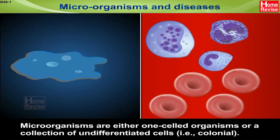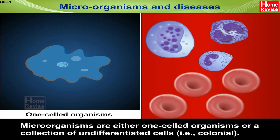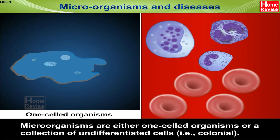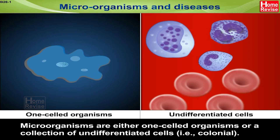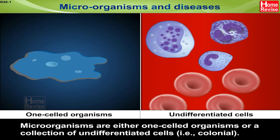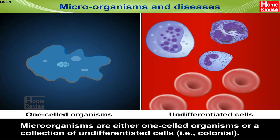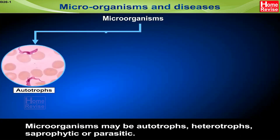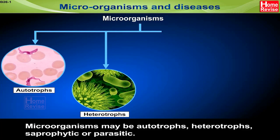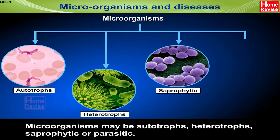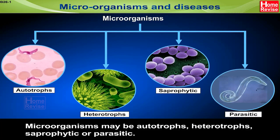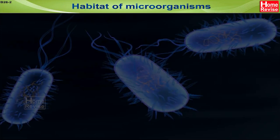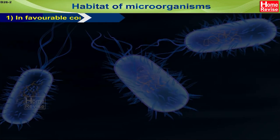Micro-organisms are either one-celled organisms or a collection of undifferentiated cells that is colonial. Micro-organisms may be autotrophs, heterotrophs, saprophytic or parasitic.